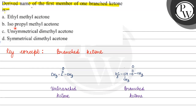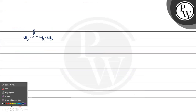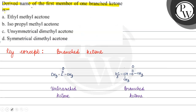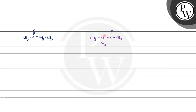Next, option B is isopropyl methyl acetone. If we talk about the isopropyl group, the isopropyl group looks like this. Isopropyl methyl acetone — this is a branched ketone. So we have a branched ketone here.